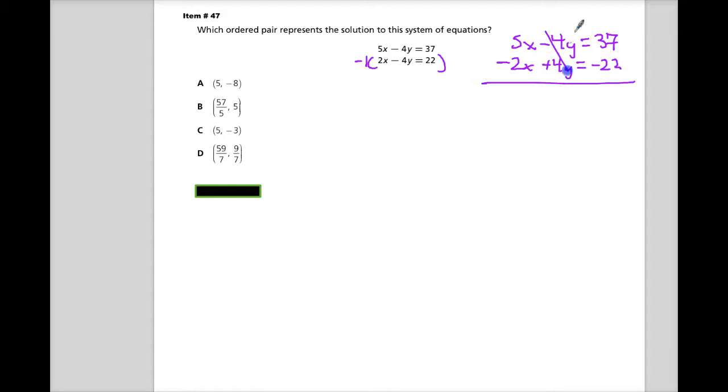So as you can see, those cancel. This gives you 3x. This leaves you with 15. Divide by 3 on both sides. And x is equal to 5.